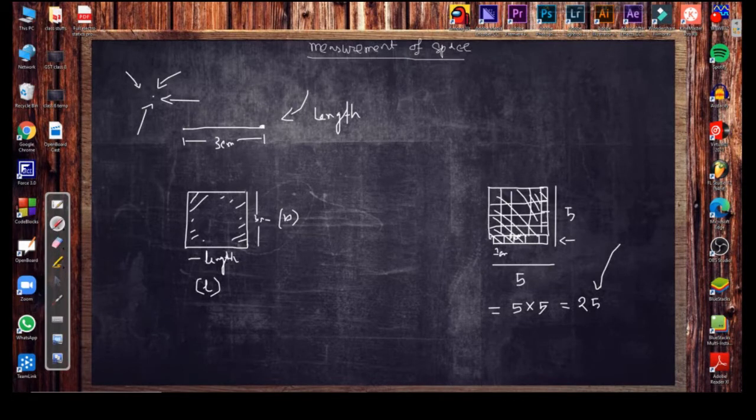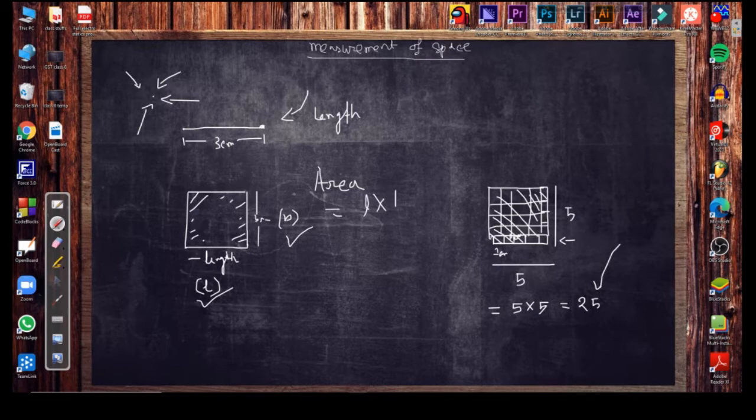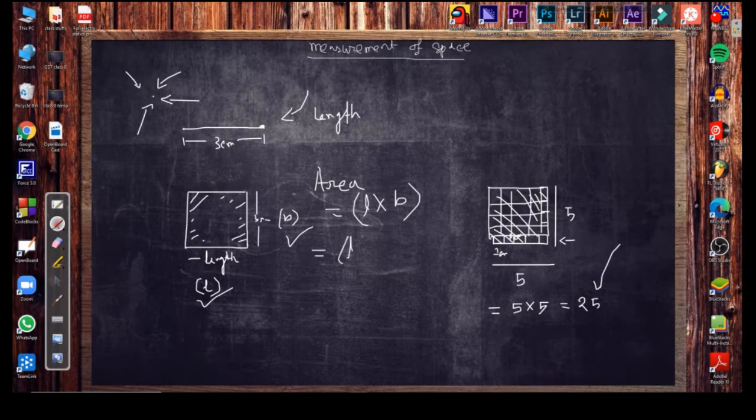So from this idea, we can say that area is the multiplication of length and breadth. So this is length and this is breadth. So if we multiply them together, we can get the value of area. And also remember that the area is in square units. So whenever you write the value of area, just write square, then unit.